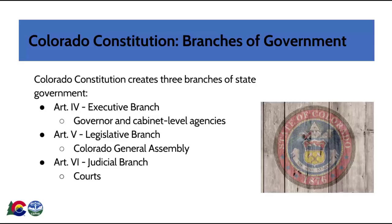We will first review Colorado's branches of government. Similar to the design of the federal constitution, the Colorado Constitution creates three branches of state government. These are Article IV, the Executive Branch, which includes the Governor and Cabinet-level agencies. State Cabinet-level agencies are constitutionally limited to 20.